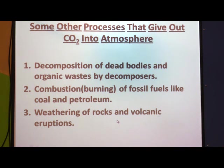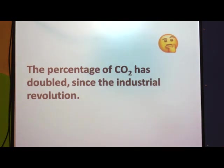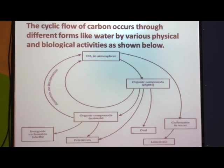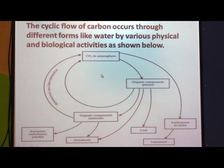So decomposition, combustion, and weathering of rocks and volcanic eruptions all give out carbon dioxide. The percentage of carbon dioxide has doubled since the industrial revolution. Because of the establishment of so many industries, a lot of carbon dioxide is getting released into the atmosphere and the percentage of CO2 in the air has almost doubled — it is a very worrisome problem. The cyclic flow of carbon occurs through different forms by various physical and biological activities.